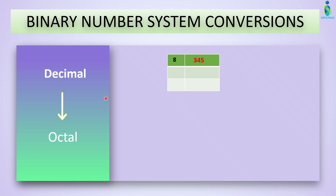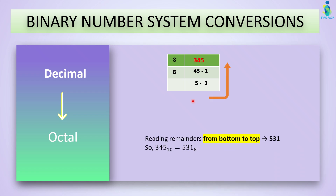Now let's convert from decimal to octal. We divide the number by 8, because the base of octal is 8. The answer is 43, remainder is 1. Continue the division — answer is 5, remainder is 3. Now note down all the remainders from bottom to top — the answer will be 531 in octal.